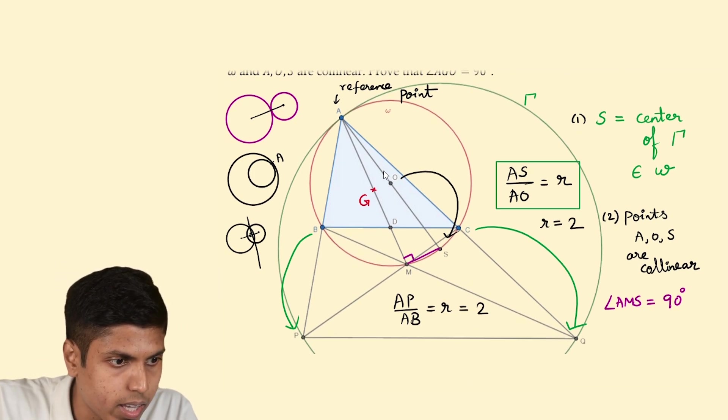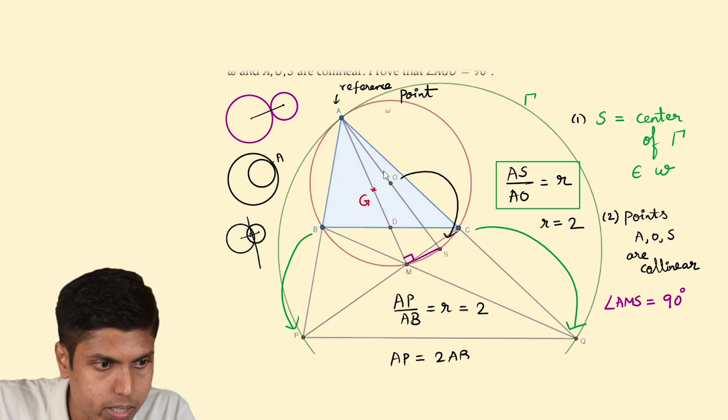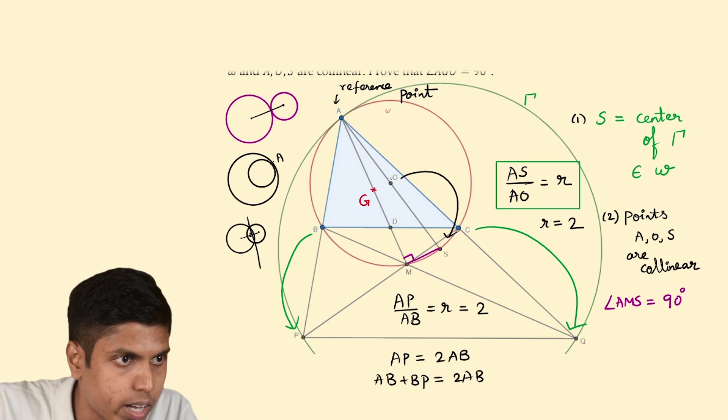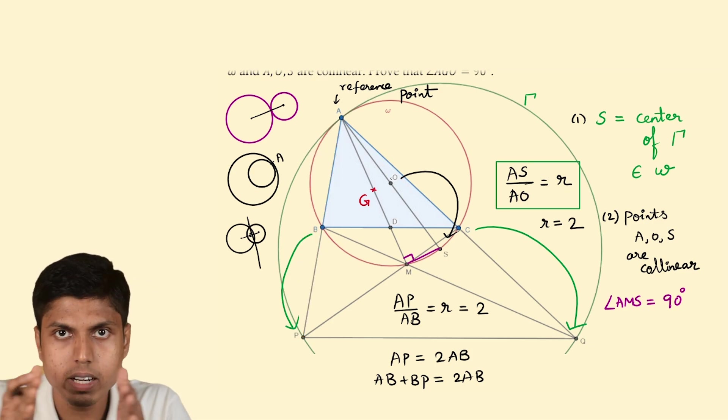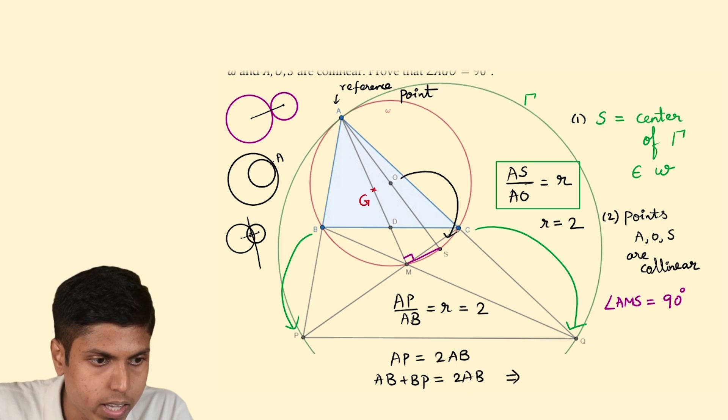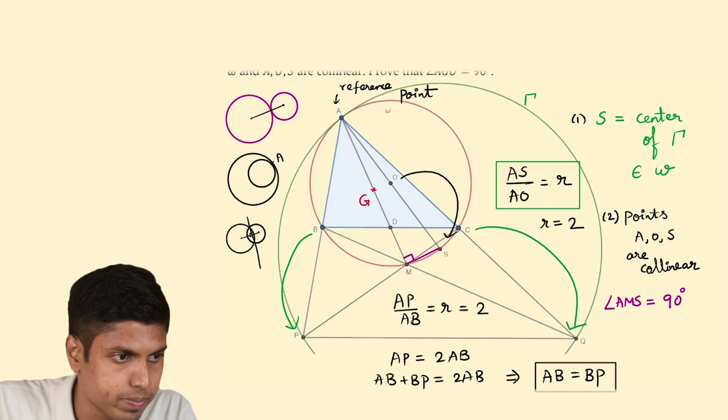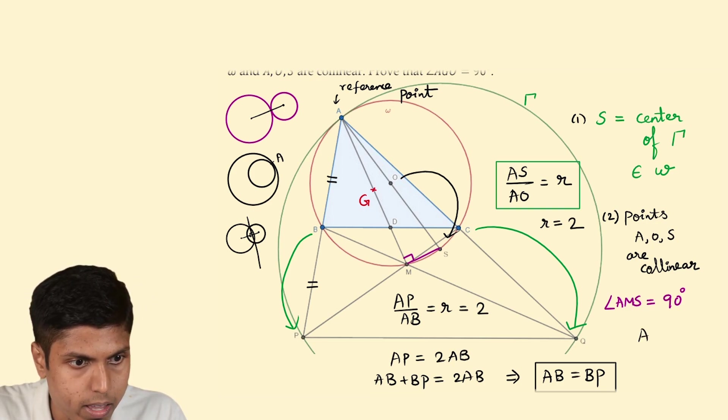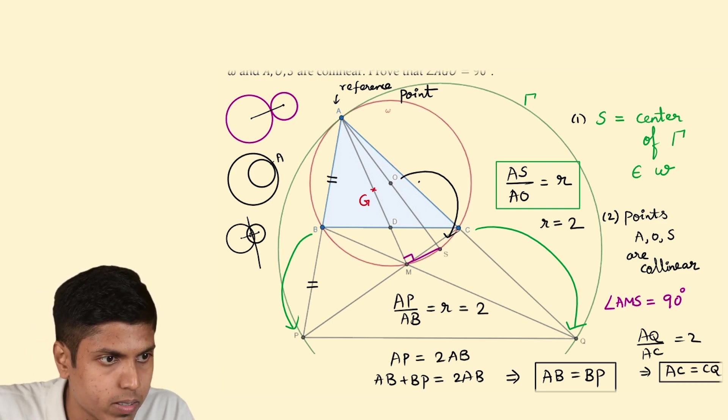Thus AP equals twice AB. I know AP is AB plus BP, so we have subdivided those lengths and upon canceling AB I would get AB equals BP. In other words, B is the midpoint of AP. By similar logic, we get AQ by AC as 2 and that would result in AC being equal to CQ. So AC is equal to CQ.